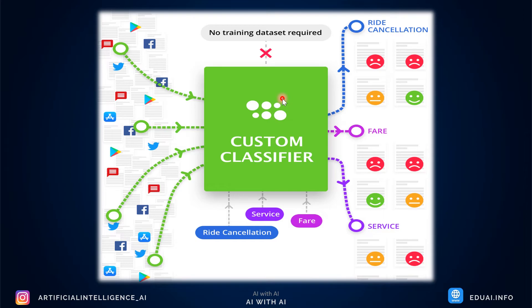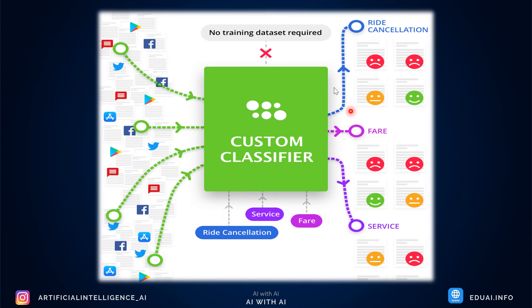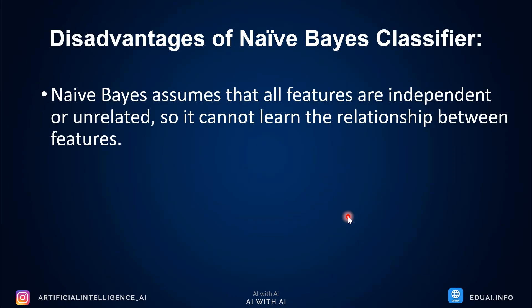Naive Bayes can also be used in recommendation systems and sentiment analysis. Sentiment analysis is one of the most popular applications of machine learning. We all use Facebook, Twitter, Instagram, WhatsApp, and Google Play — we interact by liking, commenting, and providing reviews. Based on your activity, machine learning understands your sentiments: what you like, what you don't like, whether you're happy or angry. Based on that, it can also show you targeted ads — this is where Naive Bayes can be heavily used.